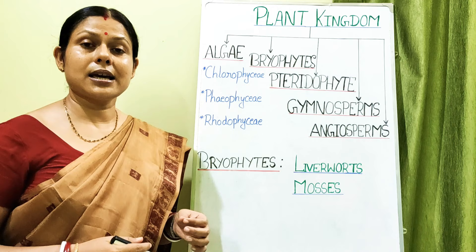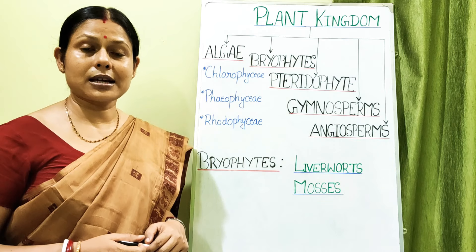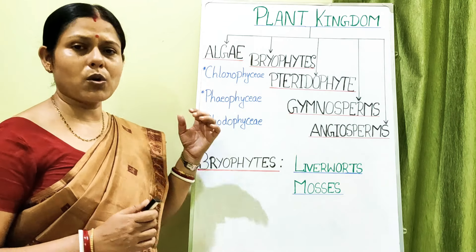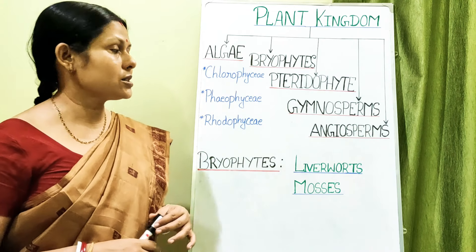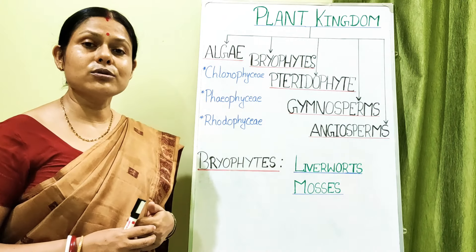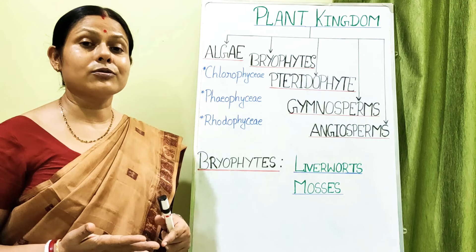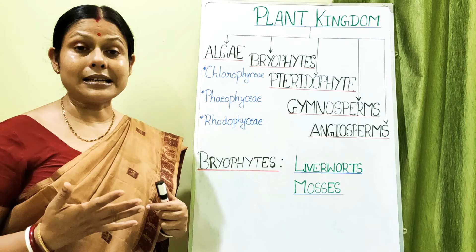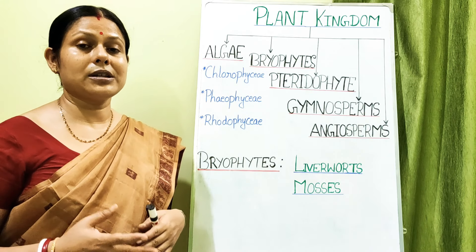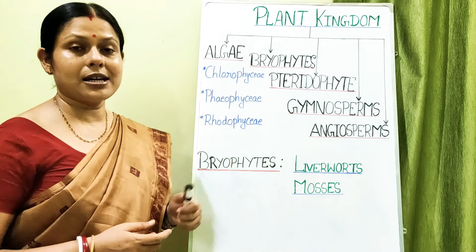Phaeophytes also have phaeophycin and xanthophyll pigments, and because of that combination they range from olive green to brown in color — that is why they are called phaeophytes or brown algae. Rhodophytes are the red algae; they have chlorophyll a and chlorophyll d, plus phycoerythrin and phycocyanin. Because of the phycoerythrin pigment they appear red or in shades of red.